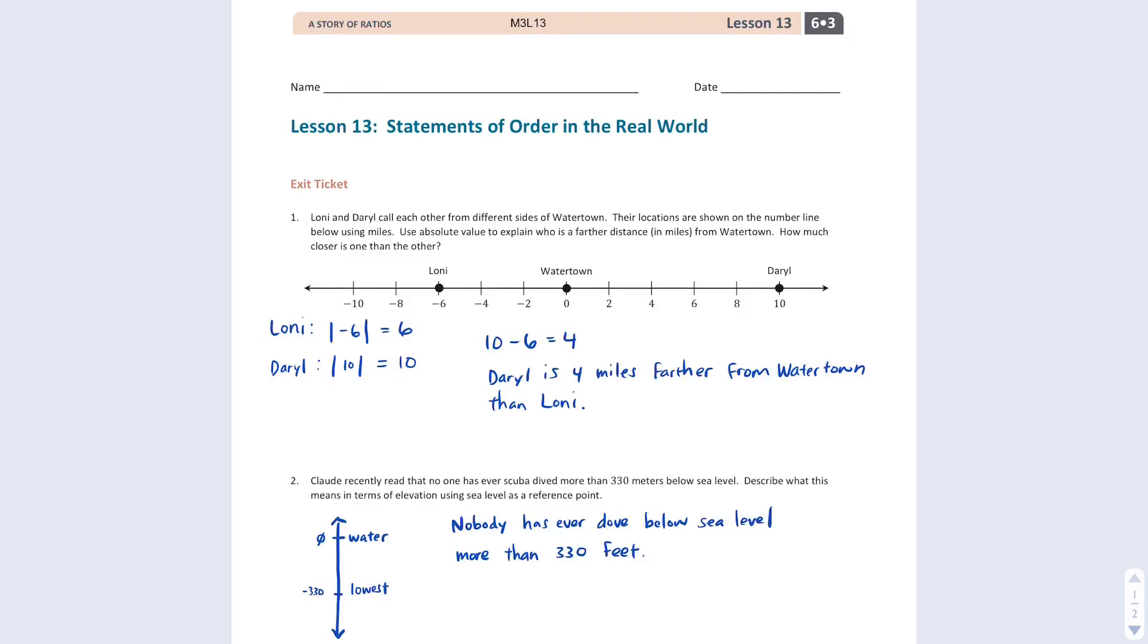Well, this has been the Module 3, Lesson 13, Exit Ticket, Statements of Order in the Real World. Lesson 13 is the final lesson of Topic B. So we just saw the wrap-up of two main ideas from the last few lessons. Question number one showed us absolute value in the real world. Question number two dealt with elevation, statements of order, showing that something is below sea level represents a negative integer or rational number.